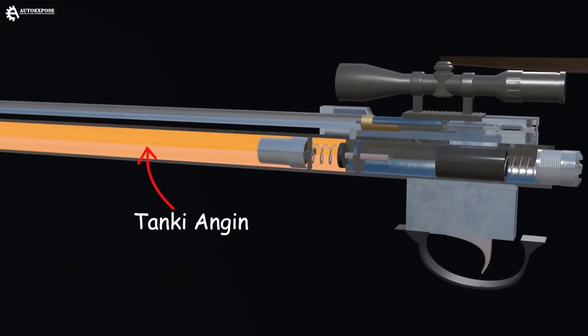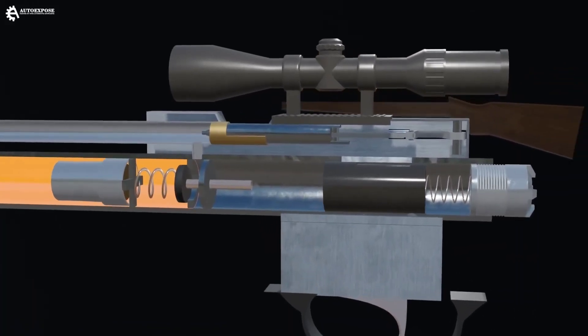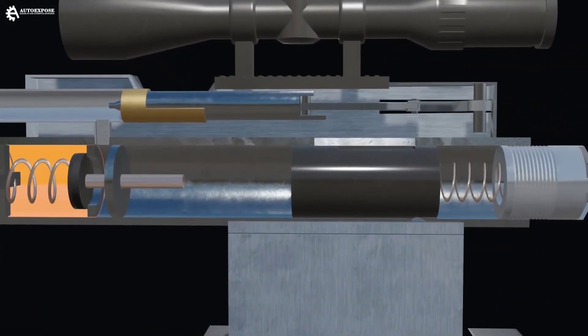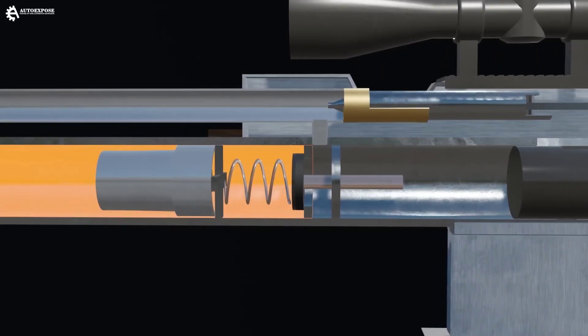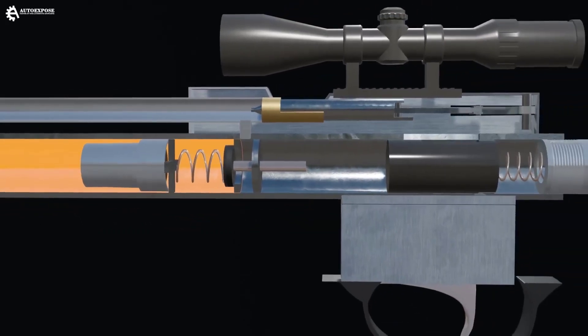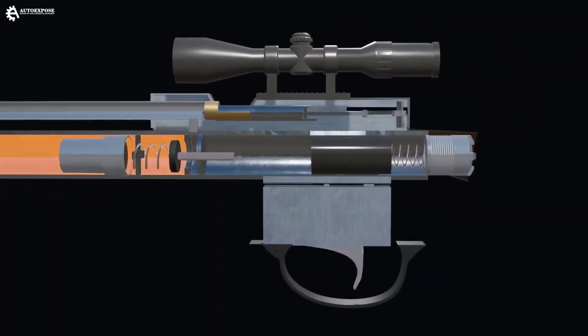Meanwhile, the large tube is used to store high-pressure wind, which will later be used as an energy source to launch the bullet. Behind the two tubes, there is a mechanism that can be said to be quite complicated to produce wind pressure that can be used to launch bullets from the bullet passageway.